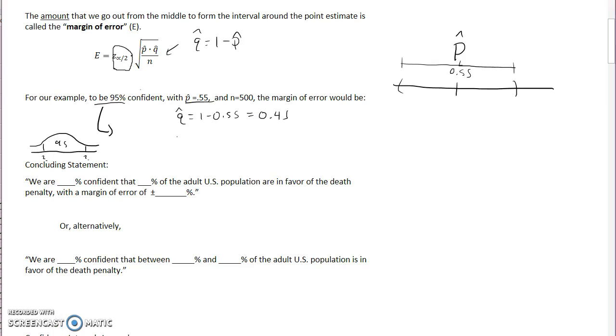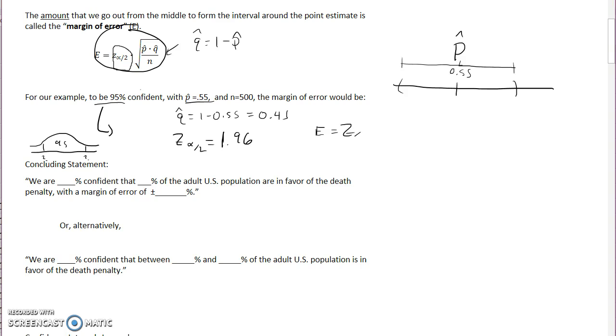So we know our Z alpha over 2 value is 1.96. I want to stress that you are not dividing anything by 2. You are just, this is the Z alpha over 2 value. So now I think we can use this formula. So let's take this formula. I'm going to write it down. E is equal to Z alpha over 2 times square root of P hat times Q hat divided by N.